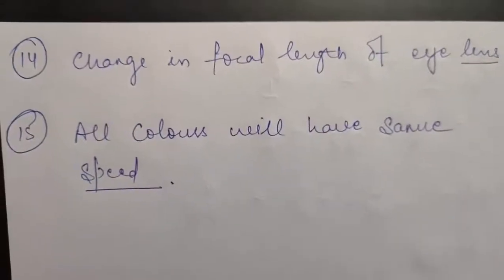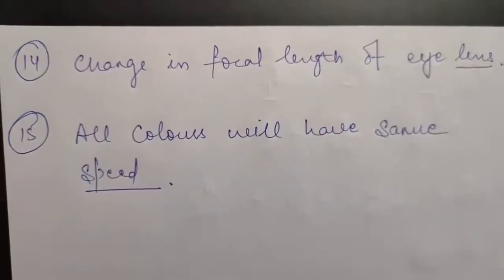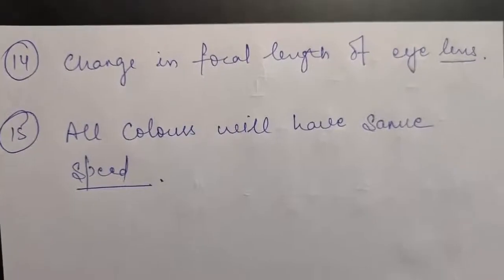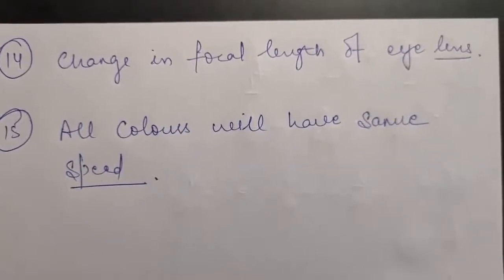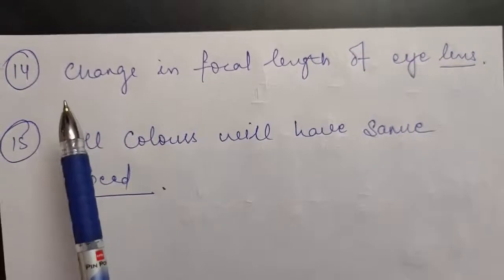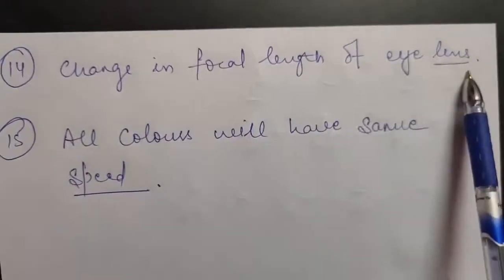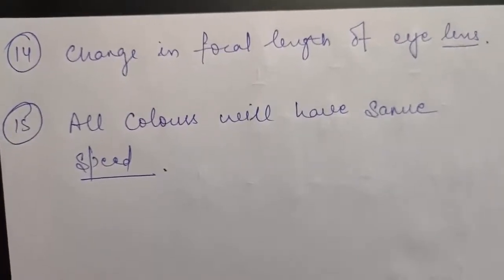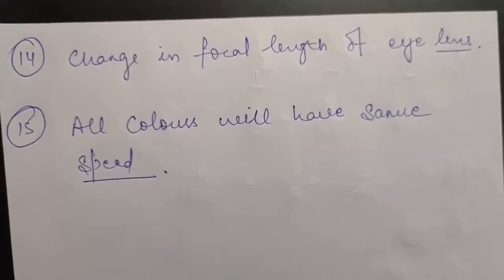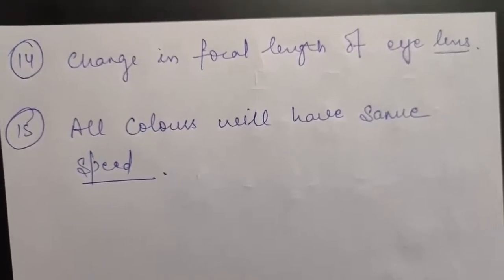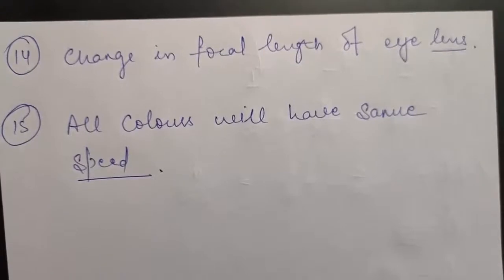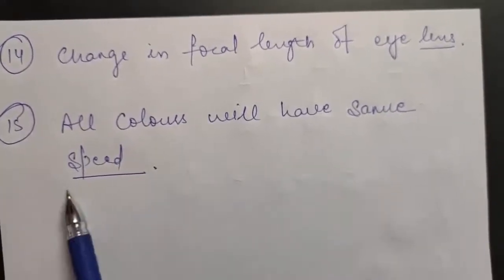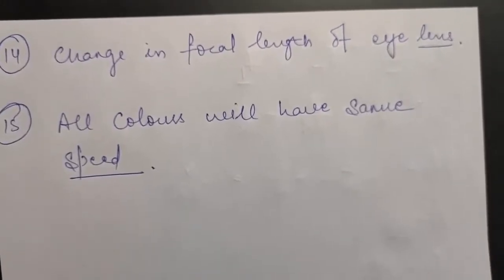In question number 14: why can an underwater swimmer not see clearly even in absolutely clear water? The reason is that when the swimmer is underwater, there is a change in focal length of the eye lens, due to which they are not able to see clearly. The last question: when white light travels through vacuum, what is the speed of all the colors? In vacuum, all colors have the same speed due to the absence of a medium.